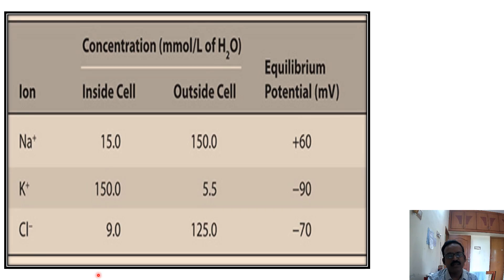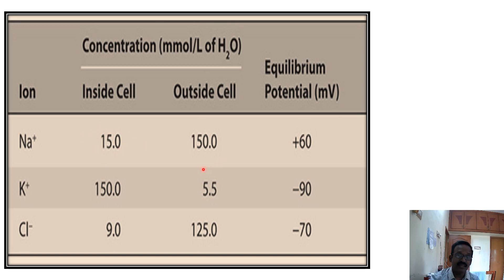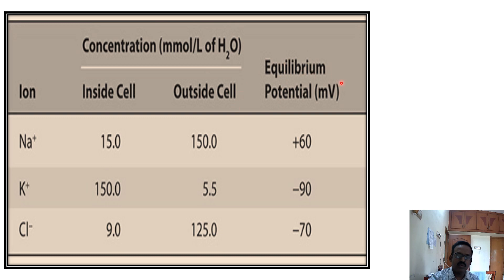This chart explains the concentration of sodium, potassium, and chloride inside and outside the cell, and the equilibrium potential. Sodium inside the cell is 15 millimol per liter; outside (extracellular fluid) is 150 millimol per liter. Potassium inside the cell is very high at 150 millimol per liter; extracellular fluid is 5.5 millimol per liter. Chloride inside is less — 9 millimol per liter; in the extracellular area it is 125 millimol per liter. The sodium equilibrium potential is plus 60, potassium is minus 90, and chloride is minus 70 millivolts.